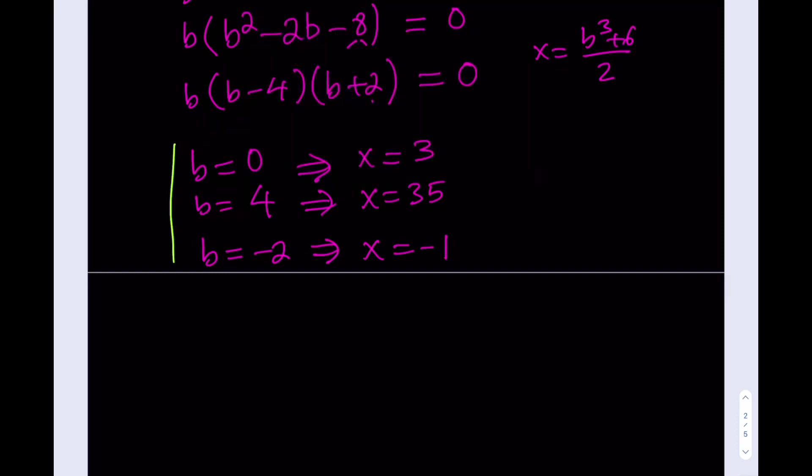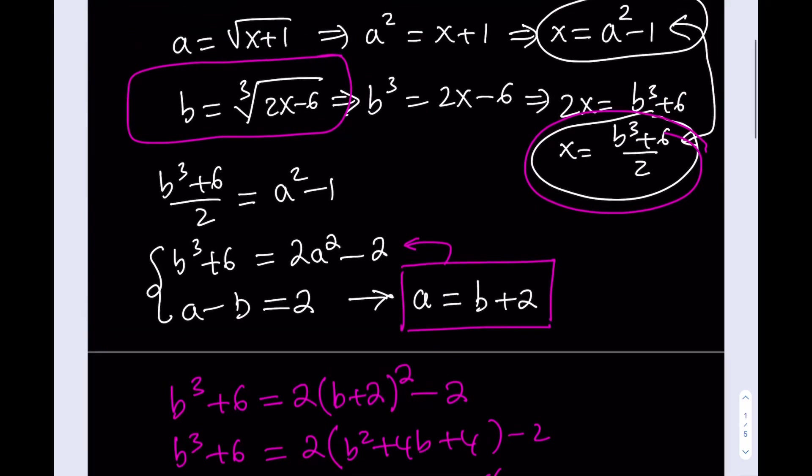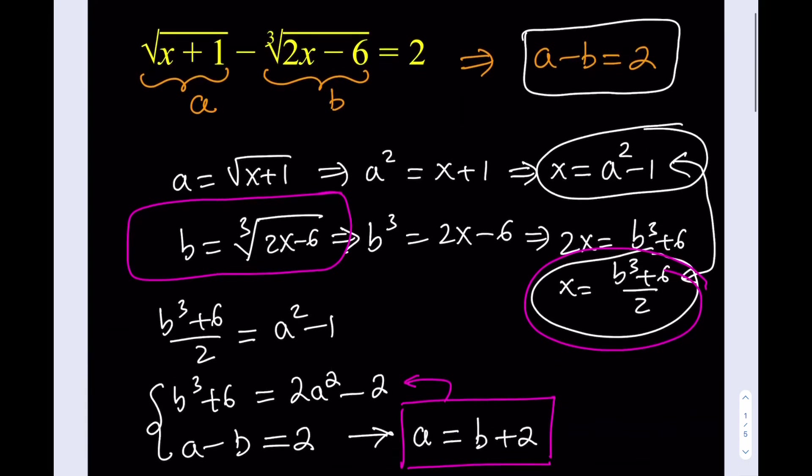Awesome. I hope you enjoyed the video. This is a very interesting method to solve these kinds of equations. And here's the results. We have three solutions, 3, 35, and negative 1. But you might want to go ahead and check these solutions because we do have a square root. What if it doesn't work? Exactly. That's what you got to do. Let's go ahead and check it out.